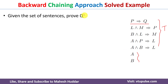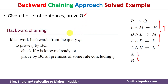Given these rules and facts, what we need to do is prove a query. In this case the query is Q. In the backward chaining technique, we start from the query Q and then go on checking backward until all the premises are true. First, we check whether the query is already known — that is, whether the query is already true or not. If it is already true, we will stop here.